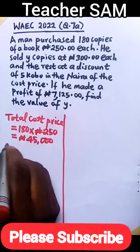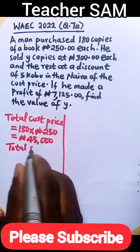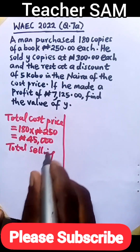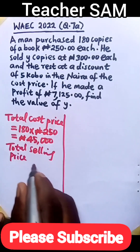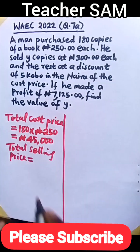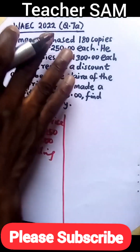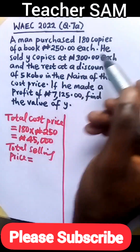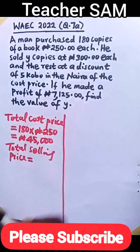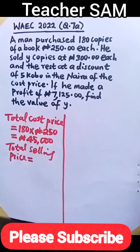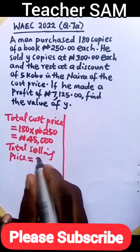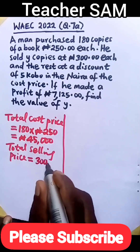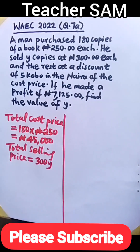Now let's also get the total selling price. He sold Y copies at 300 naira each — that is the first part of the selling price. So the first selling price will be 300 times Y, which gives us 300Y naira.